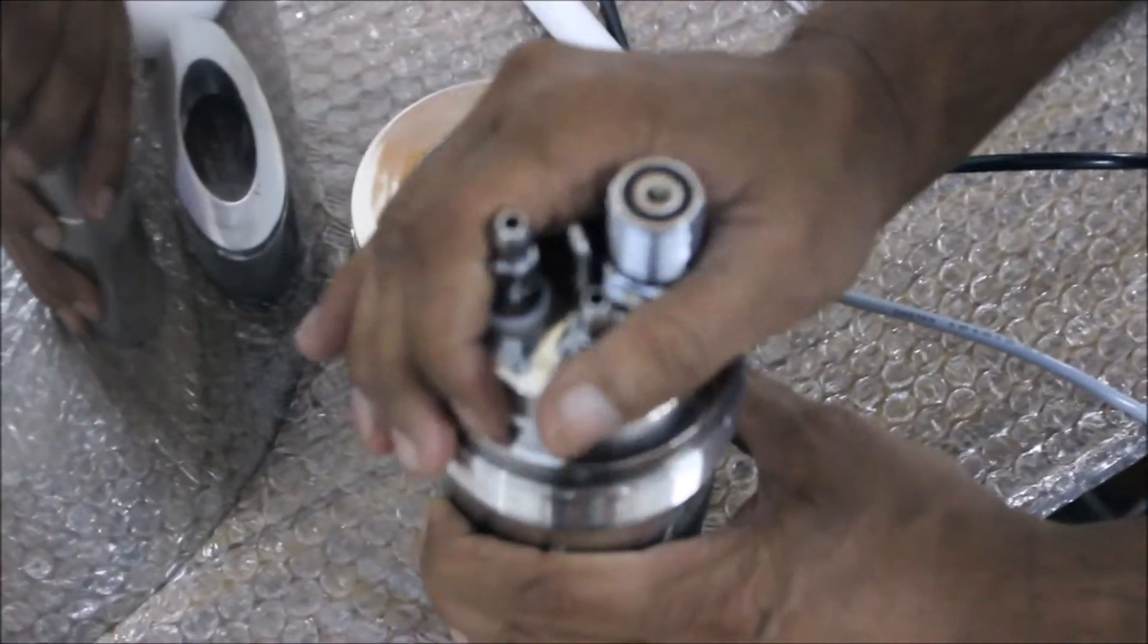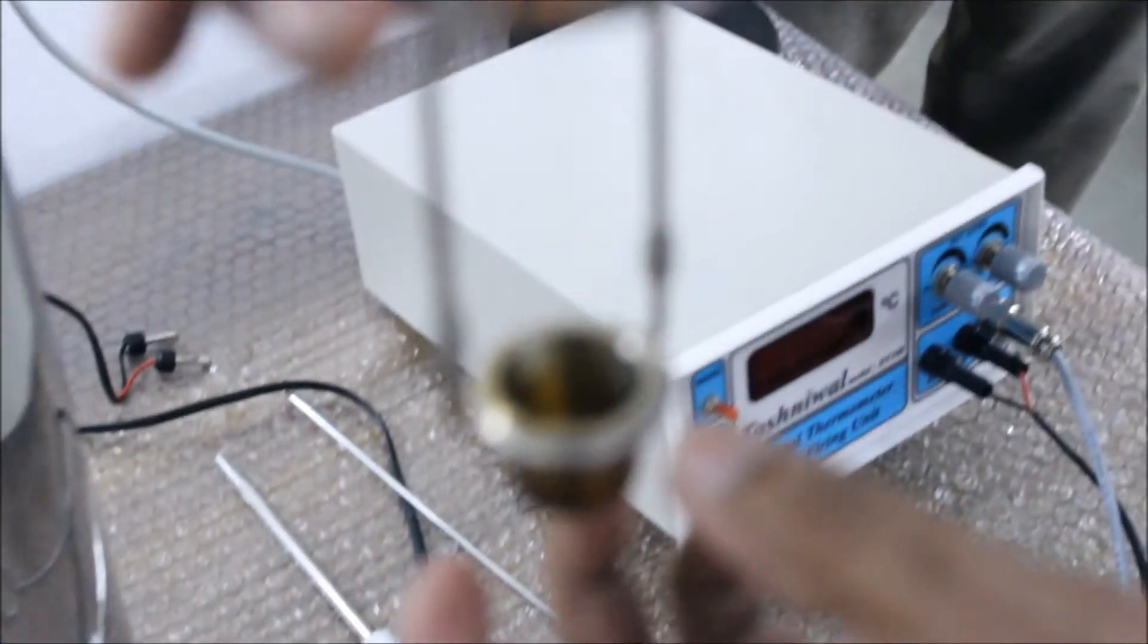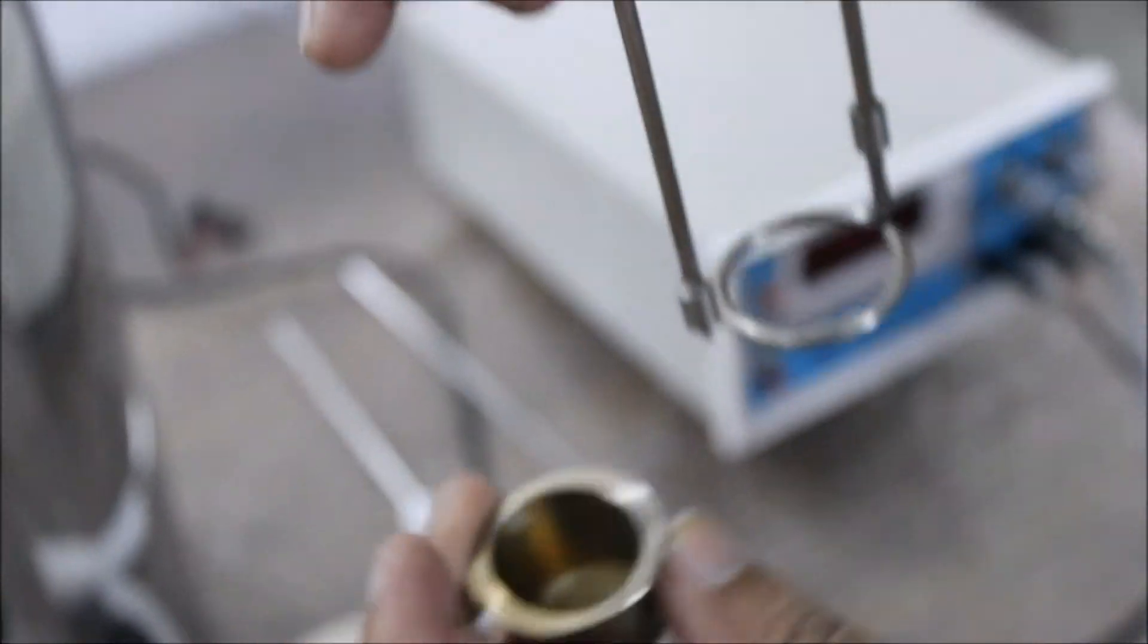Once that is done, open the bomb lid and remove the crucible and put it aside.